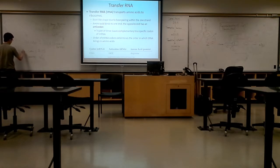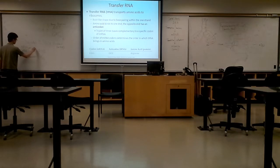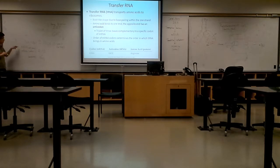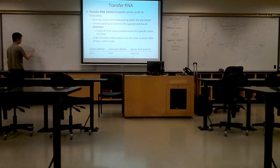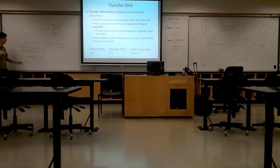If the messenger RNA codon is AUG, what will be the anticodon on the transfer RNA? We can do the base pairing: messenger RNA is A, so it will be U; U will be A; G will be C. So the anticodon on the transfer RNA will be UAC, because the codon on the messenger RNA is AUG.